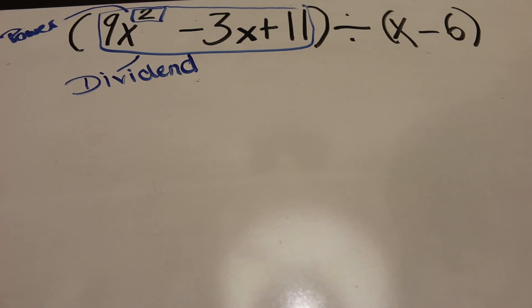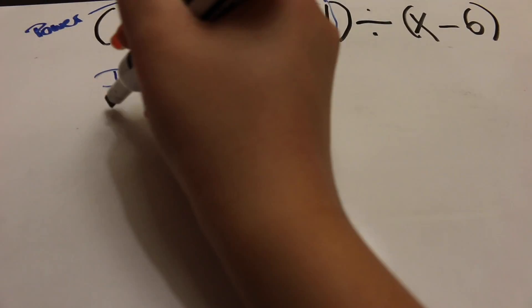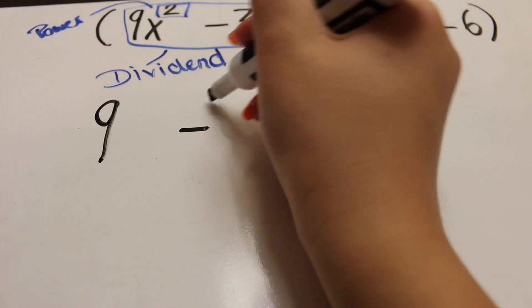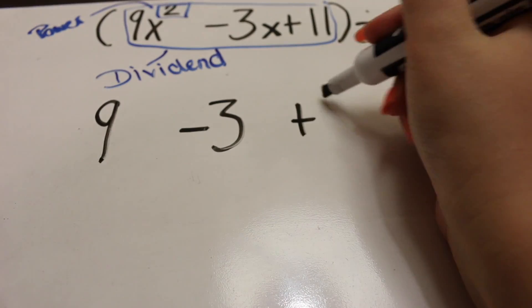We really have to make sure that we don't need a placeholder, because if one of the powers is missing we replace it with a 0 — we cannot forget that step. Since we don't need one in this case, we put the coefficients in order: 9, negative 3, and positive 11.